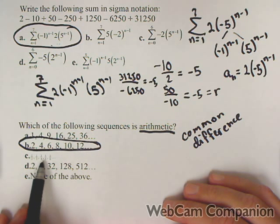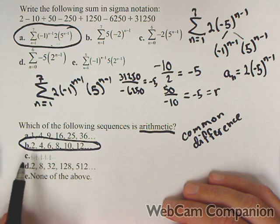1 half, 1 third, 1 fourth. That would not have a common difference. Nor does it have a common ratio. A and C are also not geometric.